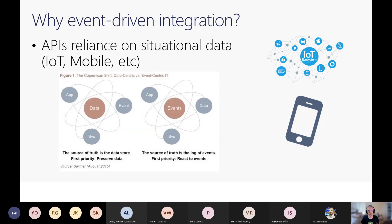About five or six years ago, Gartner talked about a Copernican shift that happened. Where traditionally, applications were built around the data — the data was the most important thing. Nowadays, we're seeing that a lot of applications are being built around the events themselves; it's all about capturing those events and responding to them.